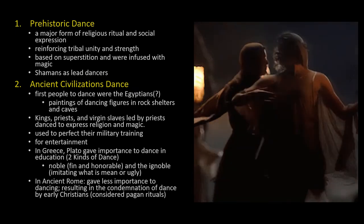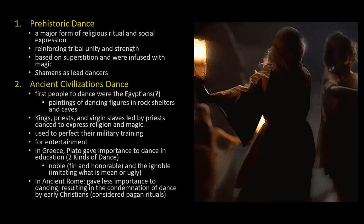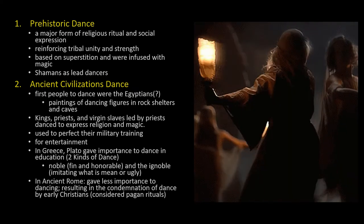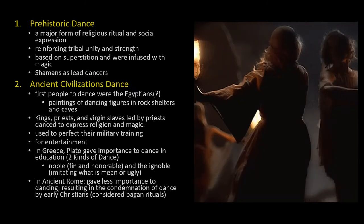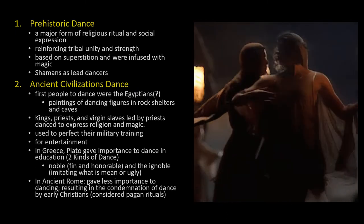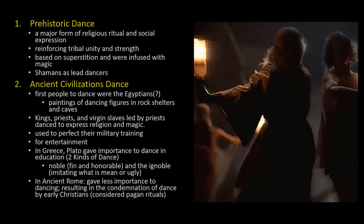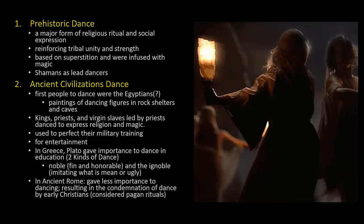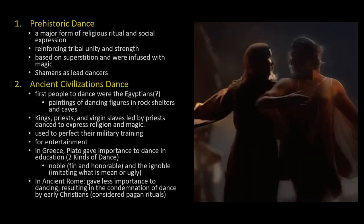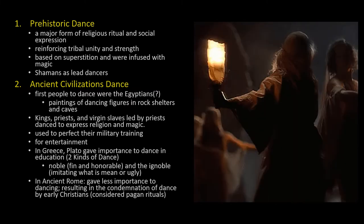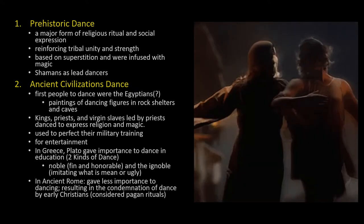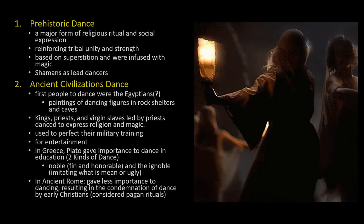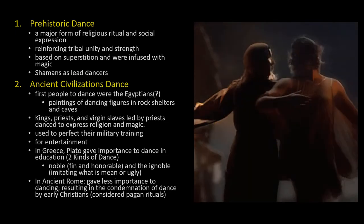Dances were also performed for entertainment. In Greece, Plato immensely gave importance to dance in education as stated in the Education on the Laws. He highlighted two kinds of dance and music. The first is the noble, which is fine and honorable, while the other is the ignoble, imitating what is mean or ugly. In contrary to Greece, ancient Rome gave less importance to dancing, which eventually became an integral part of the corruption in the latter days of the Roman Empire, resulting in the condemnation of dance by early Christians. Although dance was primarily performed for religious, social, and entertainment purposes, some dances were considered sinful and pagan by the Roman Catholic Church.